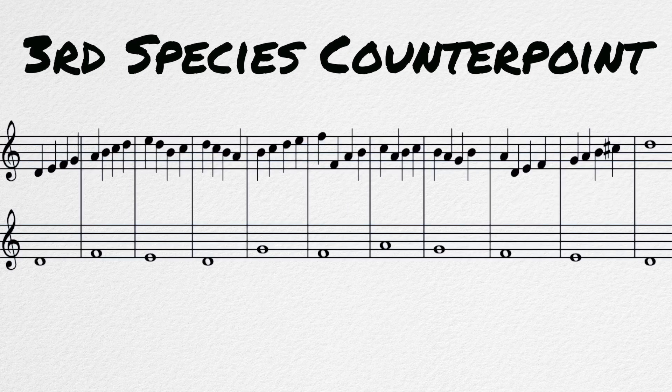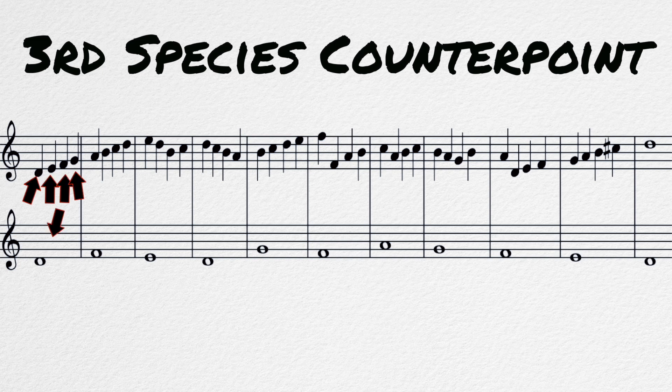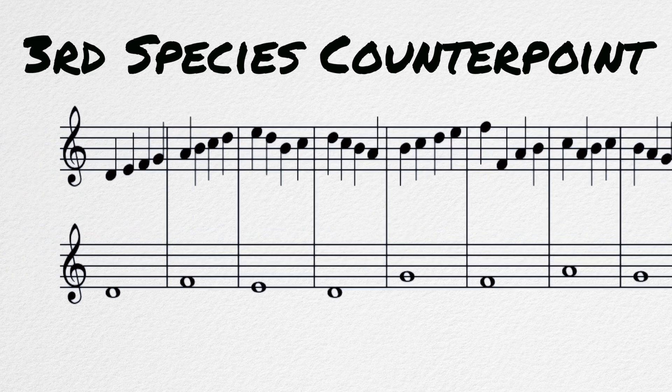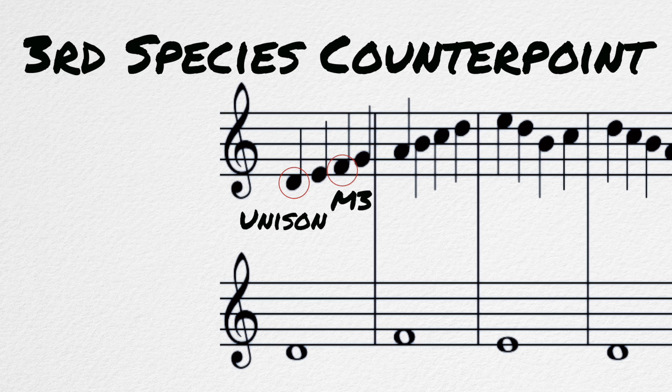Third species counterpoint. The third species is four quarter notes against the whole note. This one can get a little more complicated. In general, we want the first and third quarter notes to be consonant and the second and fourth to be dissonant. Sometimes small exceptions are made in this species.